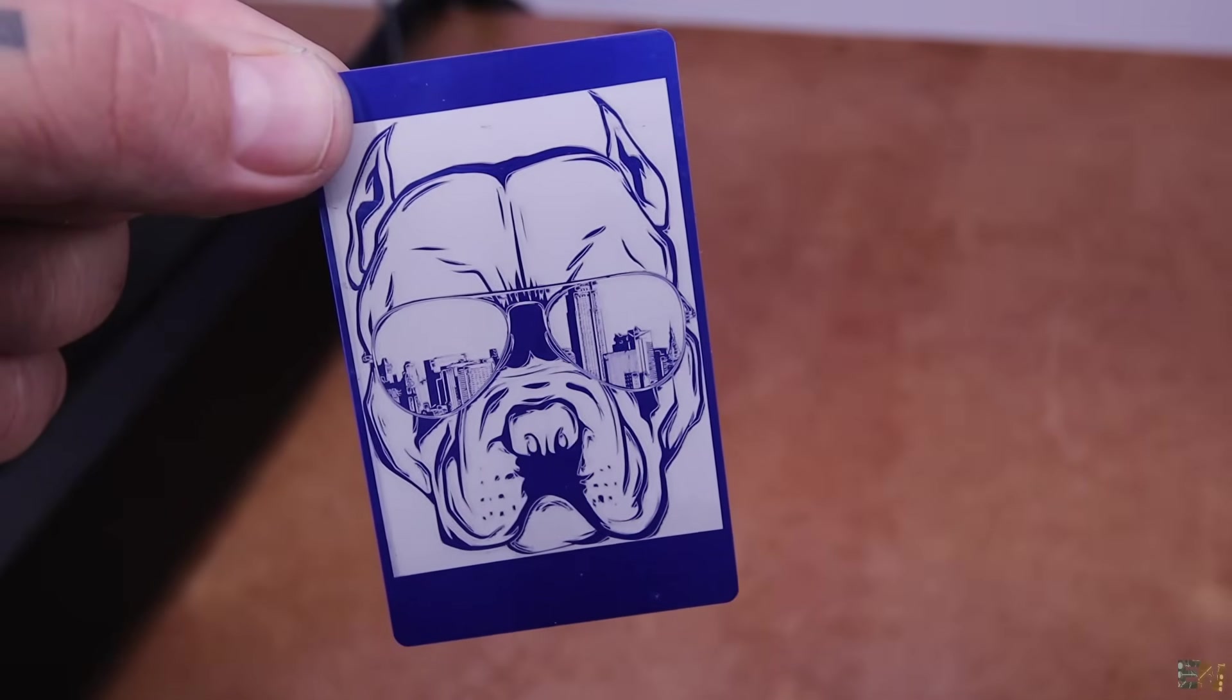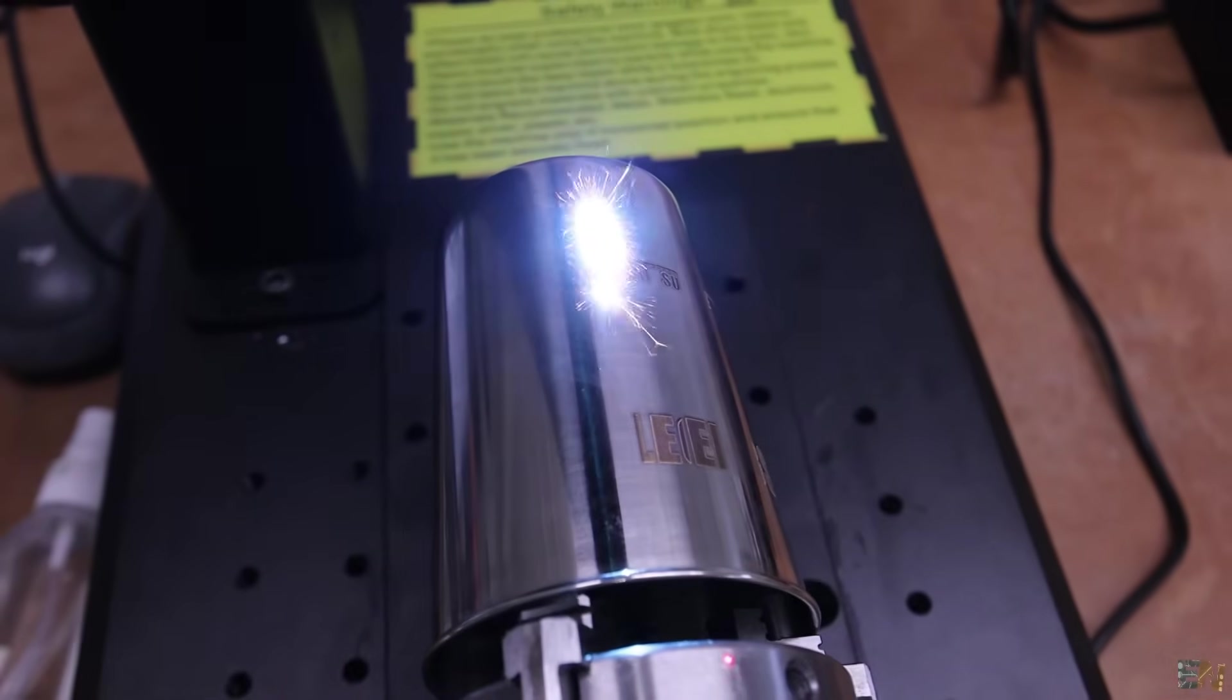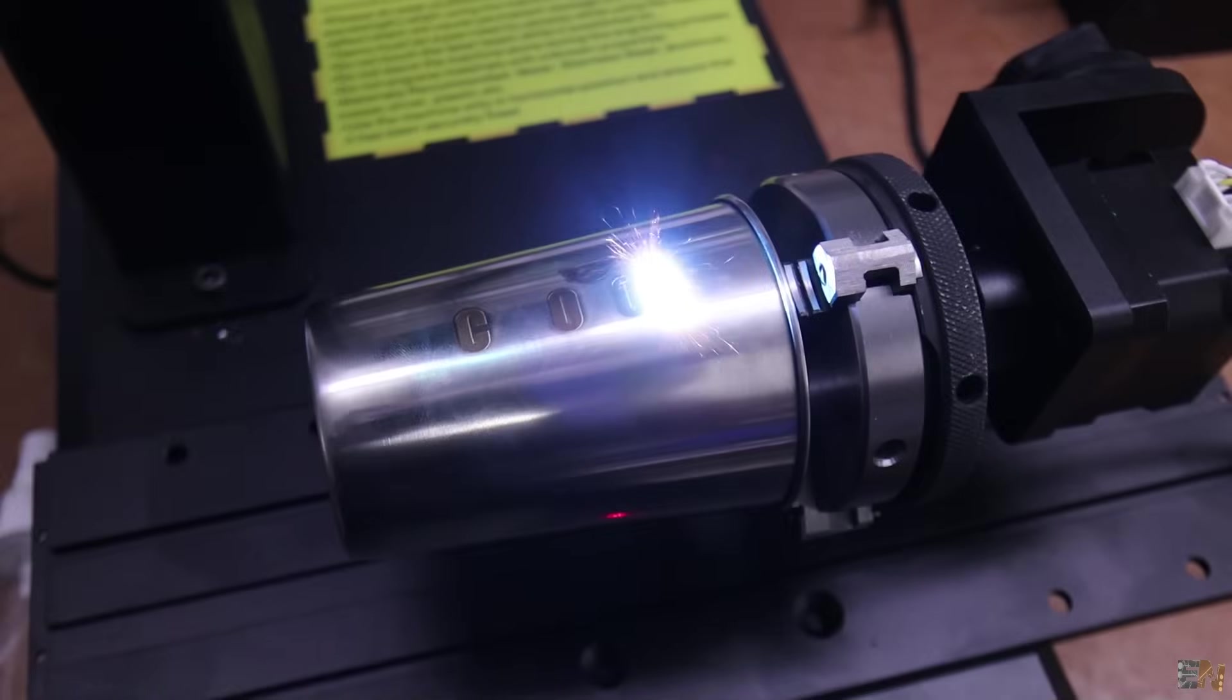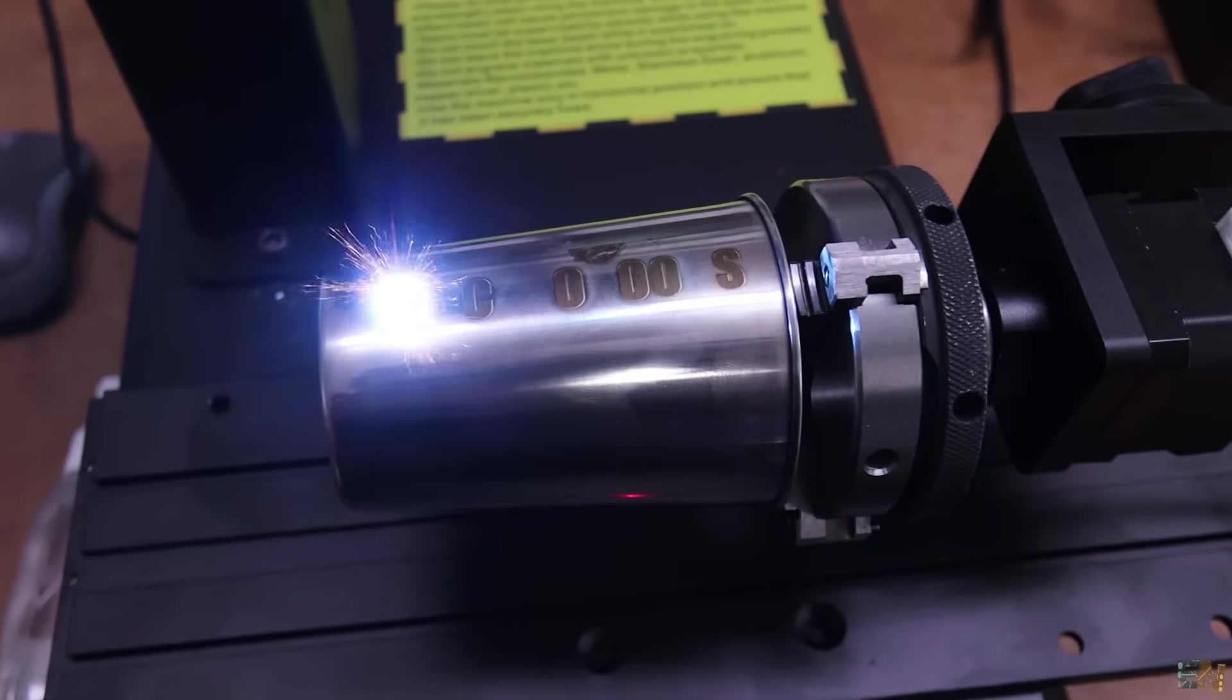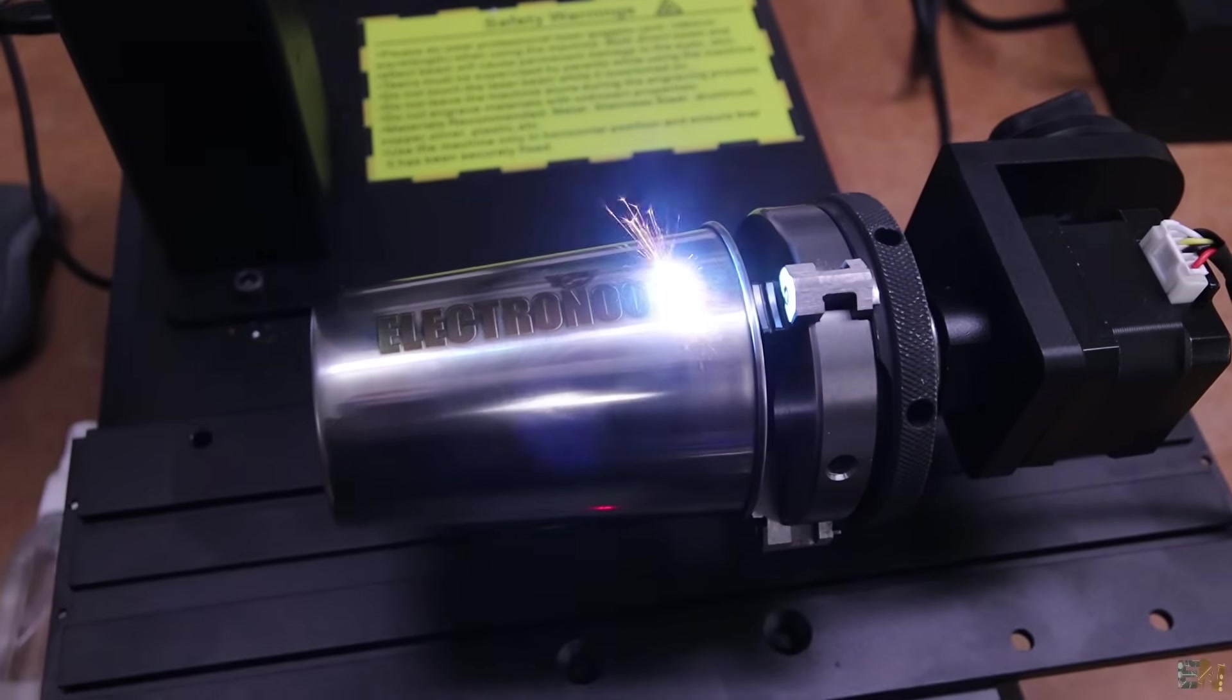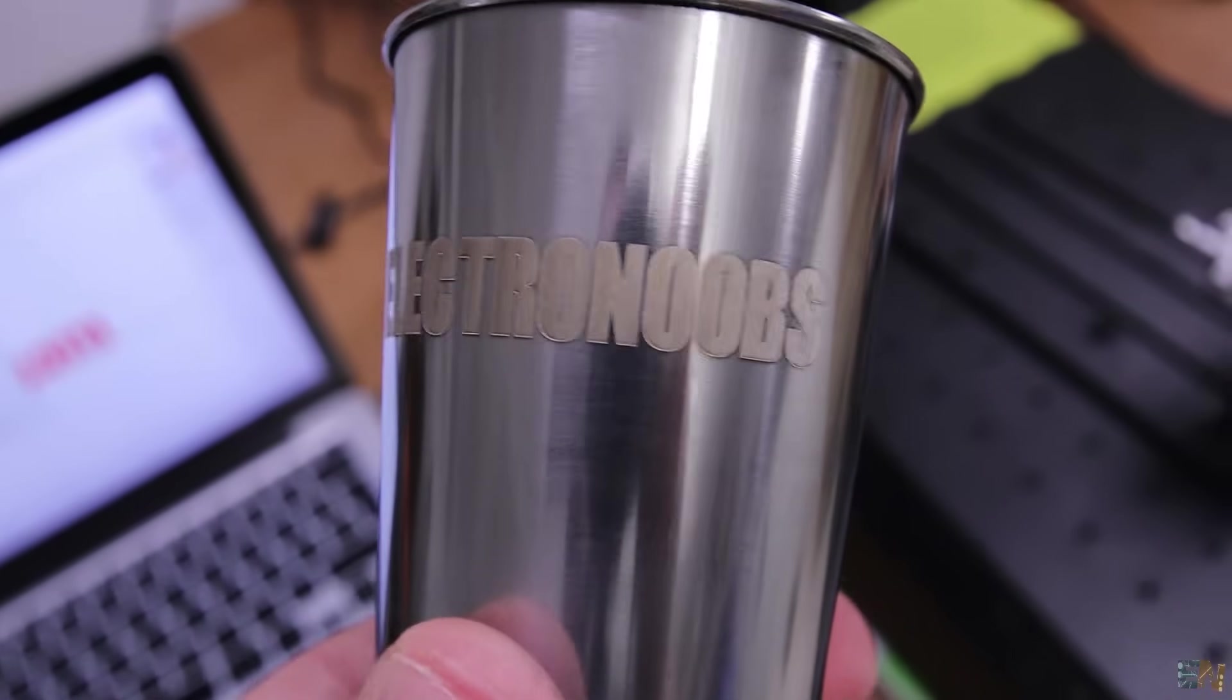I've also engraved on metal cups. And to engrave on round objects, I've used the roller or the chuck. It took me some time to get used to it but I was finally able to engrave on the stainless steel cup. And this gives you such an opportunity to create your own merch or personalize your stuff.